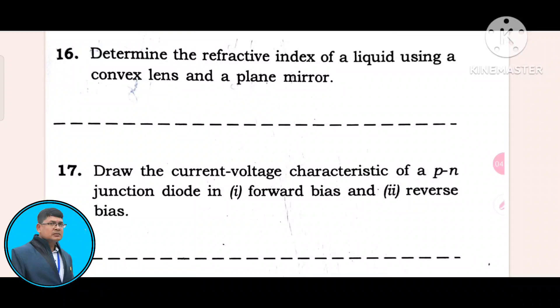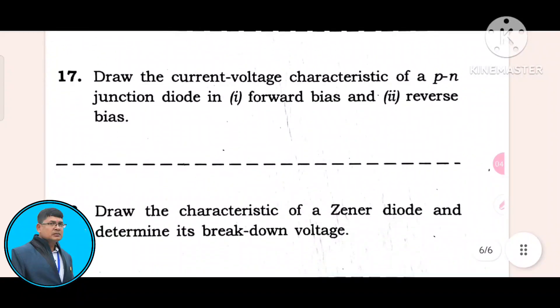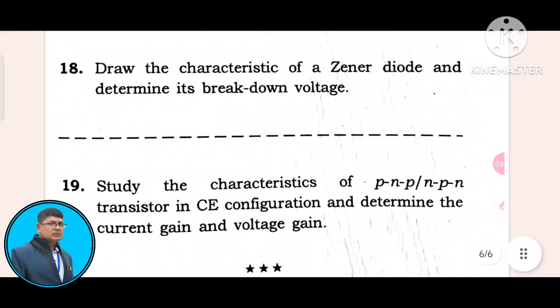Question seventeen: Draw the current-voltage characteristic of a PN junction diode in forward bias and reverse bias. Question eighteen: Draw the characteristic of a Zener diode and determine the breakdown voltage.